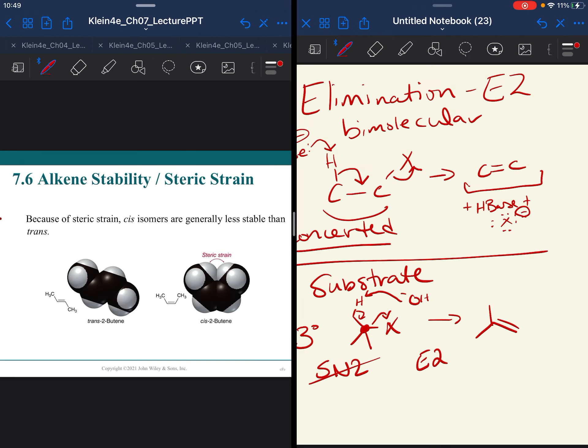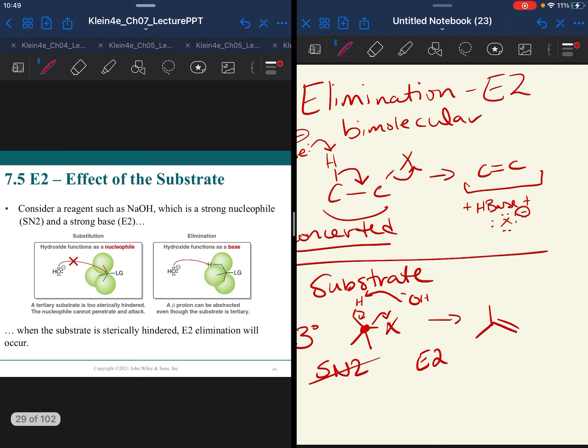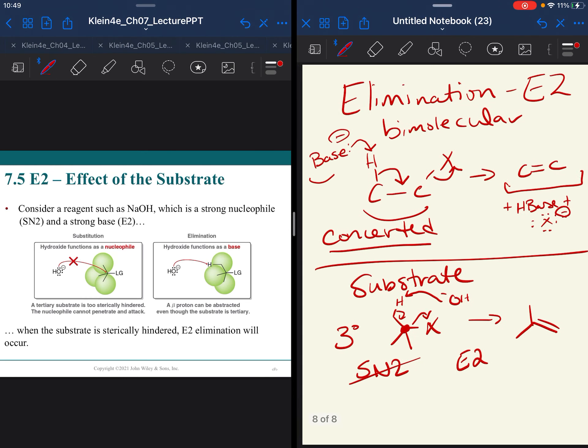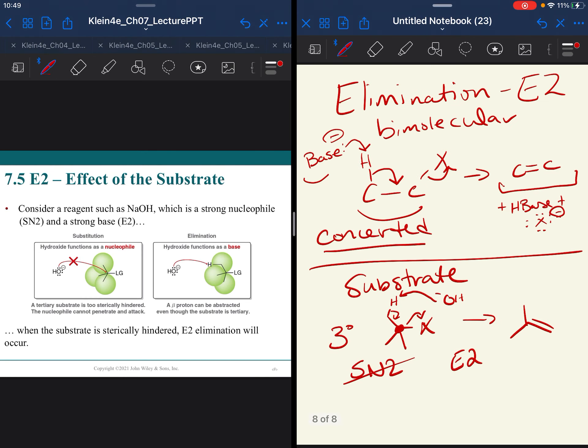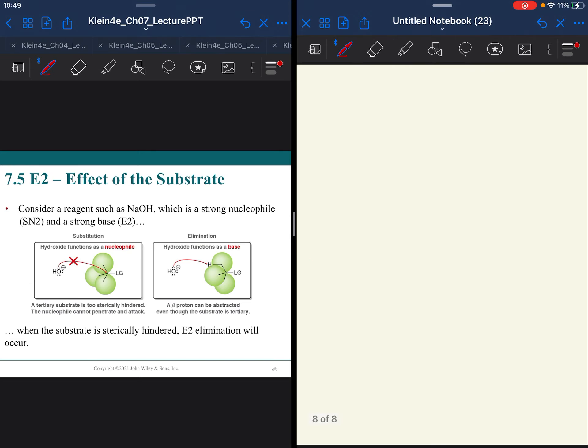Now, we talked about the substrate. The more sterically hindered ones will tend to go towards elimination. However, primary and secondary can have an elimination, but we will control that through solvent. We'll see that in a few slides. So keep that in mind. Substrate is going to be important.